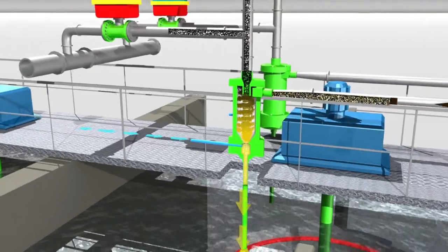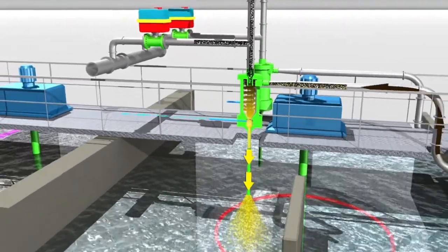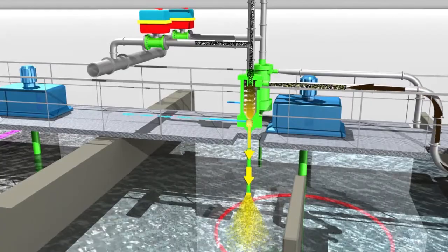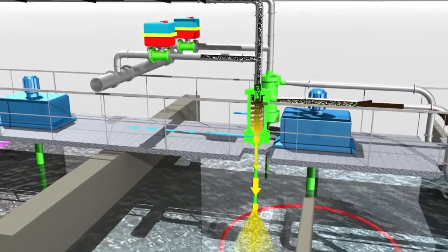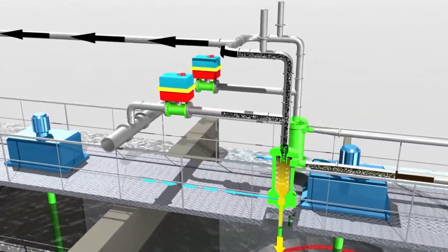The micro sand is recovered at the cyclone underflow and reinjected into the flocculation tank, whereas the activated carbon exits the cyclone at its overflow.